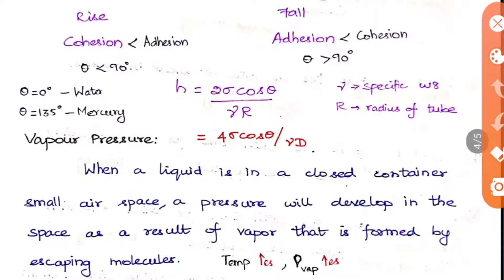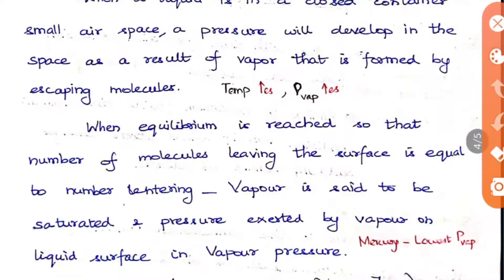The next property is vapour pressure. When a liquid is in a closed container, a pressure develops in the air space as a result of vapour formed by escaping molecules. When equilibrium is reached — number of molecules leaving equals number entering — the vapour is saturated, and the pressure exerted by the vapour on the liquid surface is called vapour pressure. When temperature increases, vapour pressure also increases.